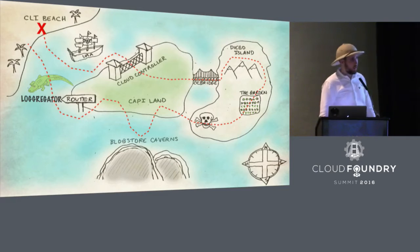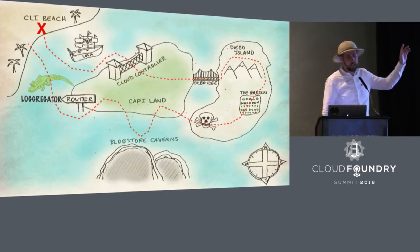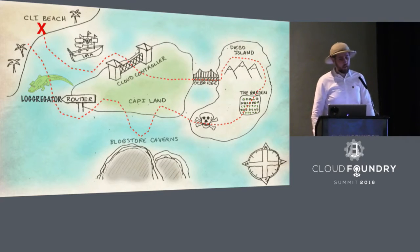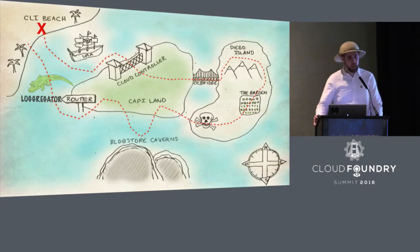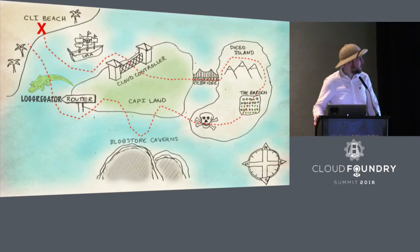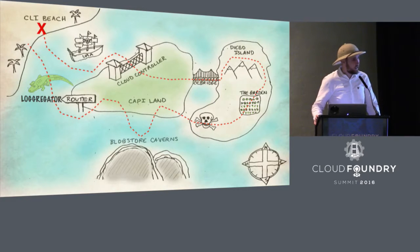You can see that we're going to be starting up in the top left at CLI beach. Then we're going to be going past the UAA, through the Cloud Controller, across the CC bridge. We're going to check out Diego Island — there's a nice garden there. We're also going to look at the router, the logator, and the blob store. That will take us right back to the beach.